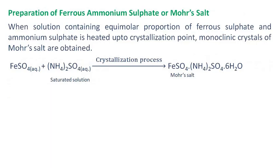Preparation of Mohr's salt: When a solution containing equimolar proportions of ferrous sulfate and ammonium sulfate is heated up to the crystallization point, monoclinic crystals of Mohr's salt are obtained.